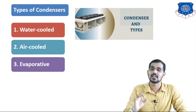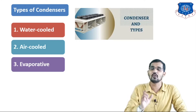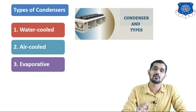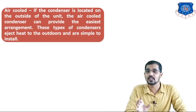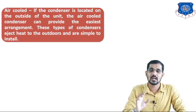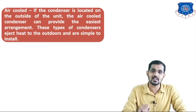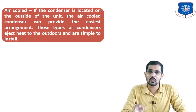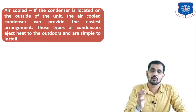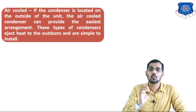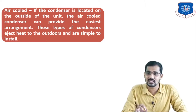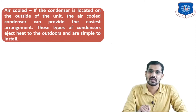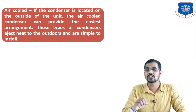All three types of condensers have some limitations. For the air cooled condenser — if the condenser is located outside of a unit, the air cooled condenser provides the easiest arrangement. This type of condenser ejects heat to the outdoors and is simple to install. Whatever heat they are removing, they are removing it to the outdoors.